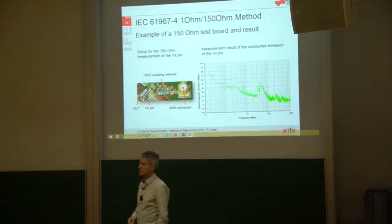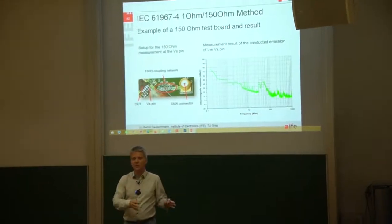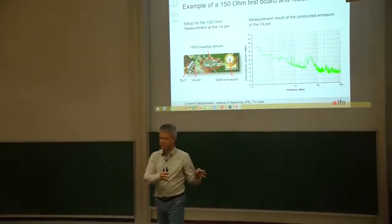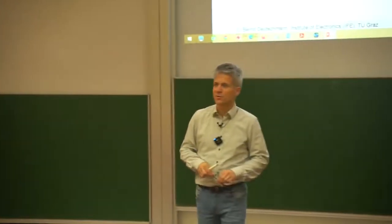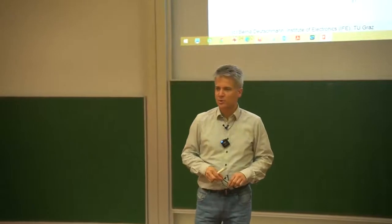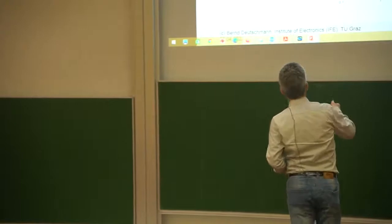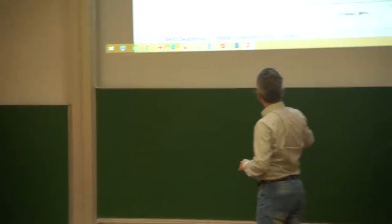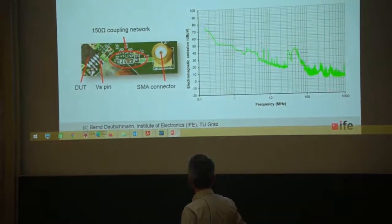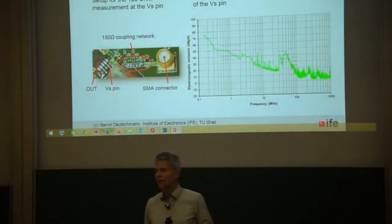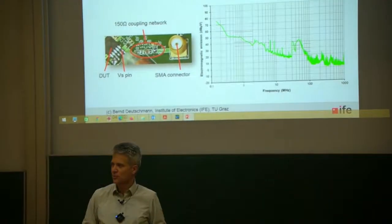Just to repeat what we have learned last time: based on international standards we have to measure in frequency ranges. CISPR 16 frequency ranges, for example, and there is Range B and Range C seen here. Range B goes from 150 kilohertz up to 30 megahertz, and then from 30 megahertz to 1 gigahertz we have Range C. In these frequency ranges we have to use different resolution bandwidths of our EMI receiver.